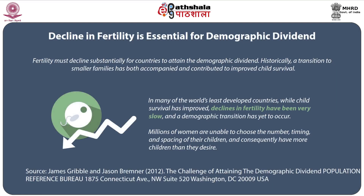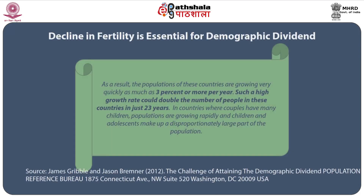Let us discuss the decline in fertility as an essential factor for demographic dividend. Fertility must decline substantially for countries to attain the demographic dividend. Historically, a transition to smaller families has both accompanied and contributed to improved child survival. But in many of the world's least developed countries, while child survival has improved, declines in fertility have been very slow and demographic transition has yet to occur. Millions of women are unable to choose the number, timing and spacing of their children, and consequently have more children than they desire. As a result, populations of these countries are growing at a very rapid rate — as much as 3 percent or more per year.